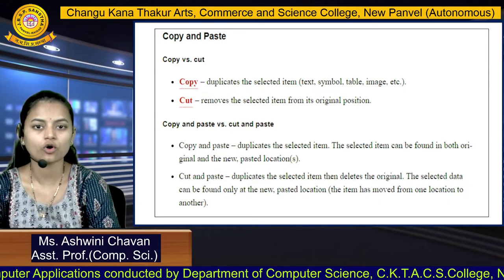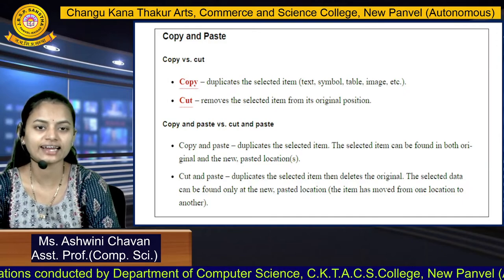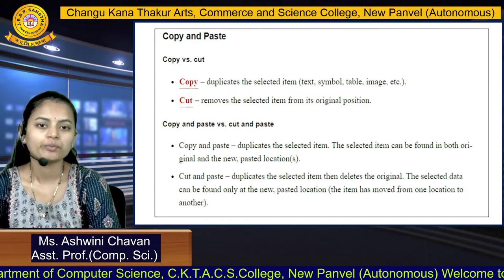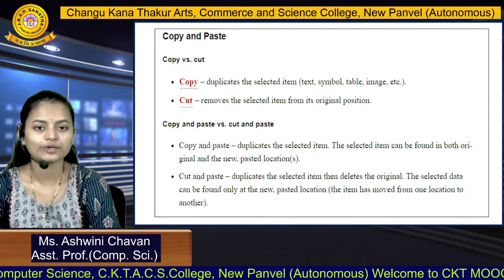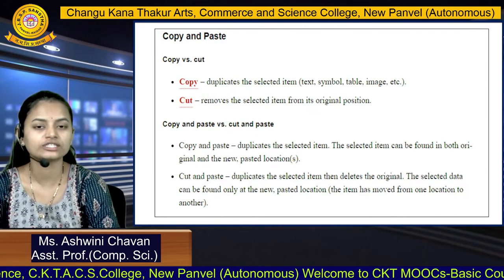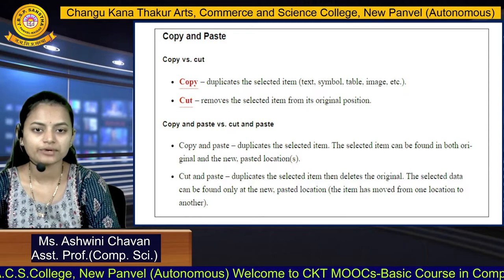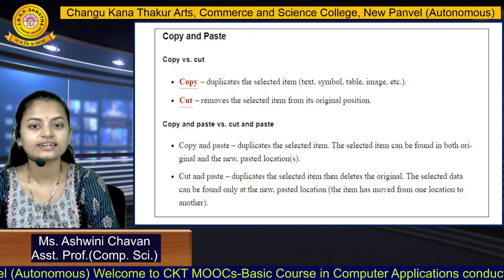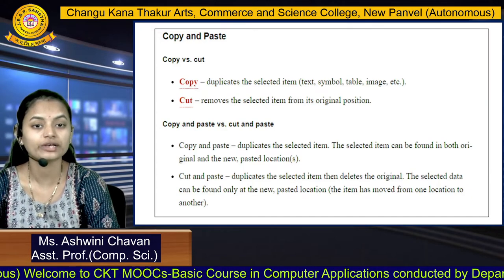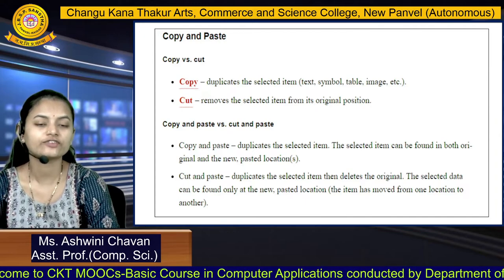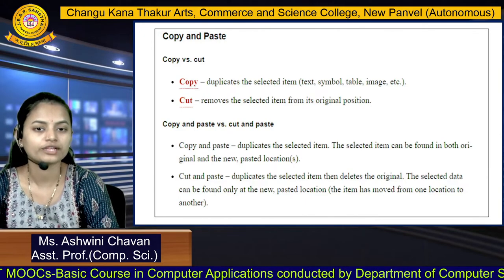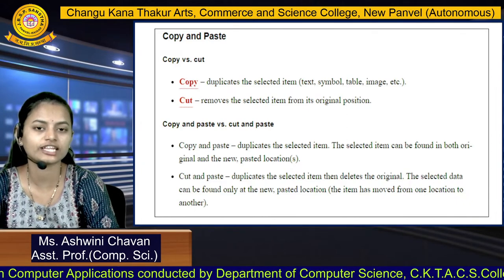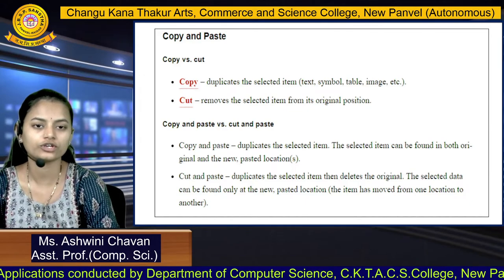Copy and Paste duplicates the selected item so it can be found in both the original and the new pasted location, resulting in multiple copies. Cut and Paste moves the item — the selected text can be found only at the new pasted location because it is deleted from the original place. You can revert with the Undo and Redo options in Microsoft Word.